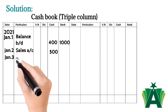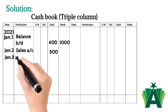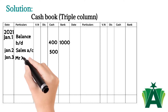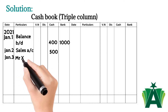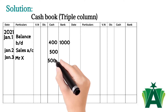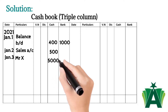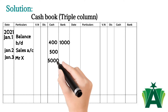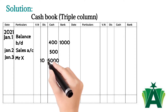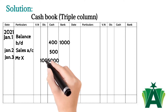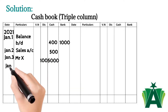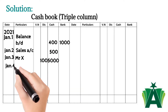January 3rd — cash received from Mr. X $5,000 and discount allowed $100. Here three accounts are involved: cash account debit with $5,000, discount account also debit with $100, and Mr. X account is credit. The $5,000 is recorded in the cash column and $100 is recorded in the discount column with reference to Mr. X.